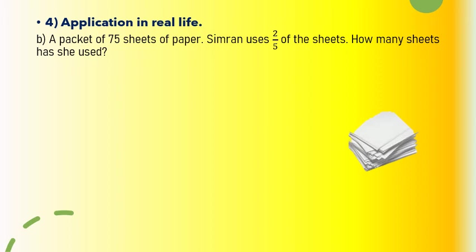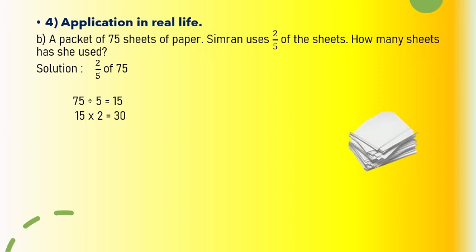Here we have some word problems. The first one: a packet of 75 sheets of paper. Simran uses 2 by 5 of the sheets. How many sheets has she used? Basically the solution is to find 2 by 5 of 75. Step 1: divide 75 by 5, giving 15. Then we multiply 15 by 2, giving 30. So 2 by 5 of 75 is 30 — she has used 30 sheets of paper.